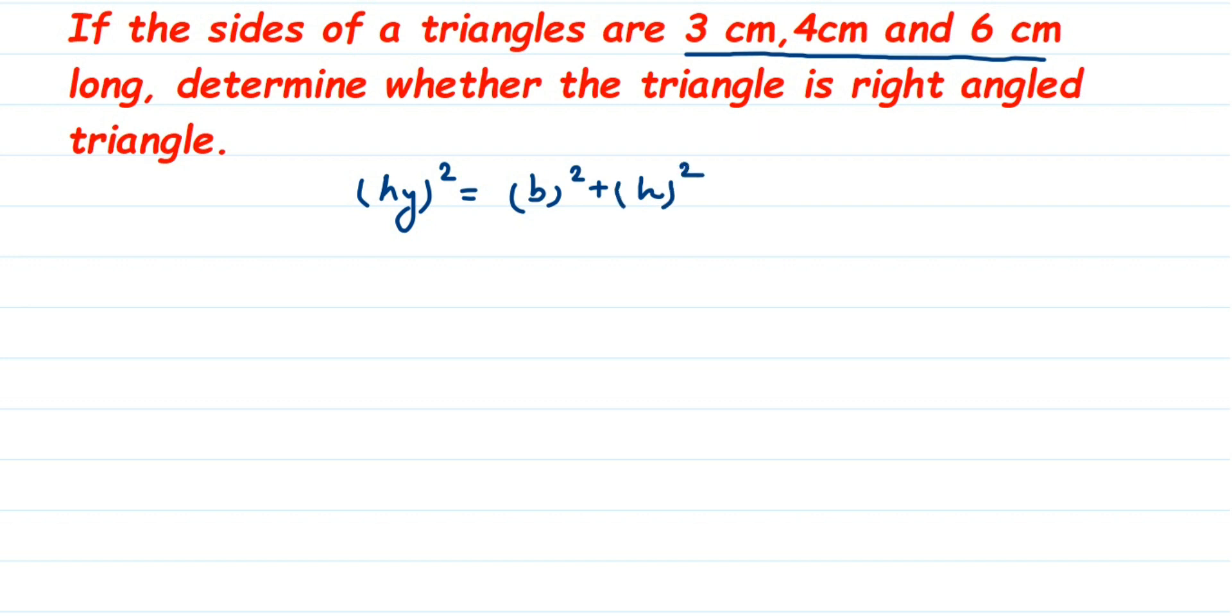Suppose I have a right angle triangle, I am just assuming here. This is my right angle triangle and we know in a right angle triangle, one angle will be 90 degree.